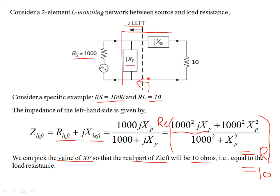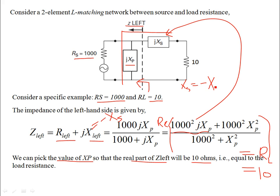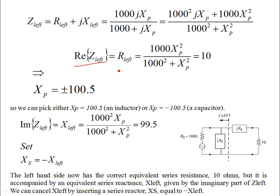The imaginary part appearing in Z_left is cancelled by the series reactor, by setting X_series equal to minus X_left. Whatever the imaginary part is, you set it to minus X_left so it cancels out, leaving only the real part that matches the source impedance. The real part is set equal to the load impedance, and you solve for XP — the only unknown, which appears as a quadratic giving plus and minus solutions.